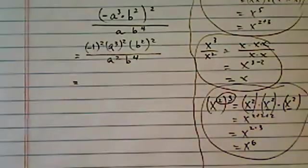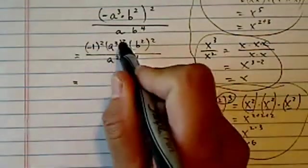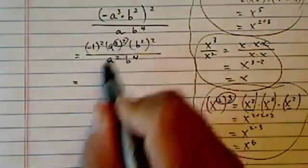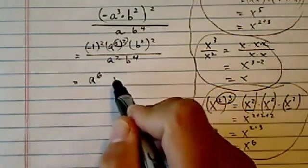Minus one squared is positive one, hey, we like that, it disappears. Now, remember the rule here, it looks like a multiplication, and multiply it, to the sixth.